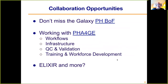We are reaching out beyond Galaxy. We are having a Birds of a Feather meeting, so don't miss that. The Public Health Alliance for Genomic Epidemiology — PHAGE — has working groups on workflows, infrastructure, quality control and validation, and training and workforce development, all useful places to collaborate. On a regional basis we could work with groups like Elixir, though that is still in a nascent stage.